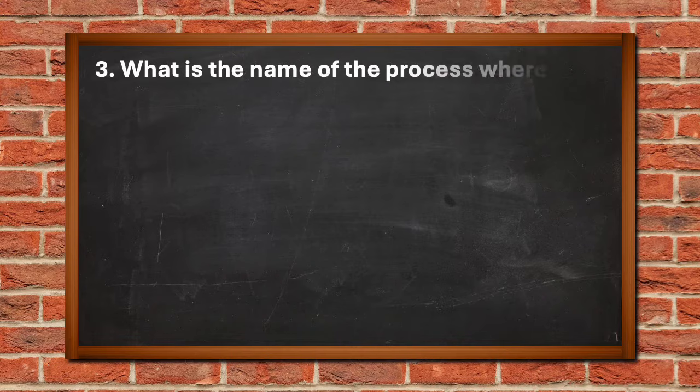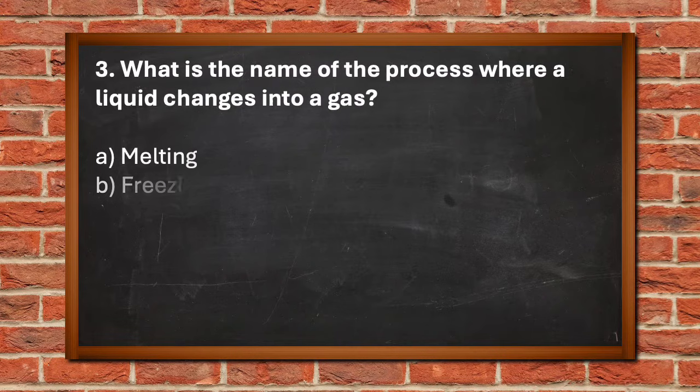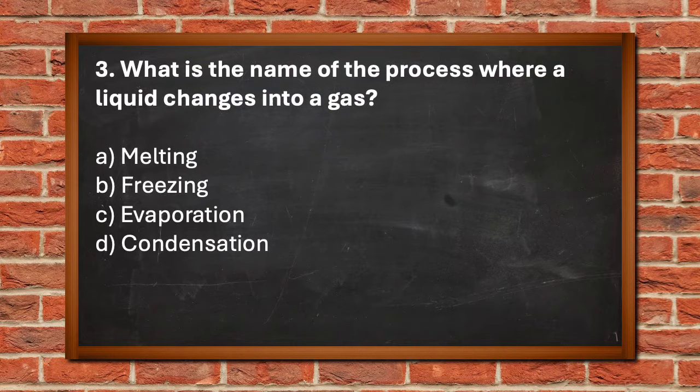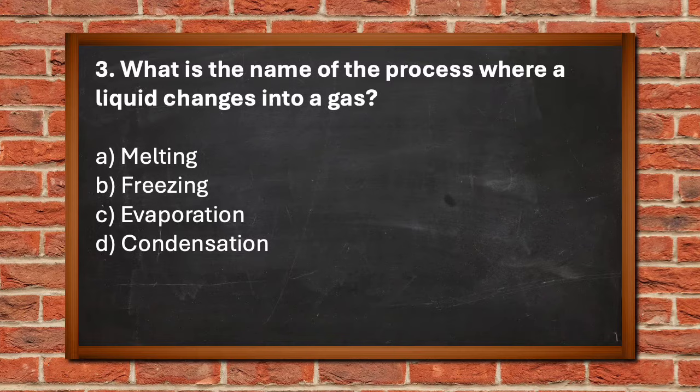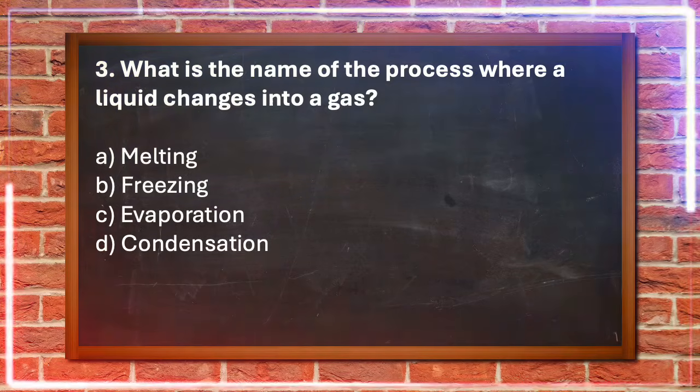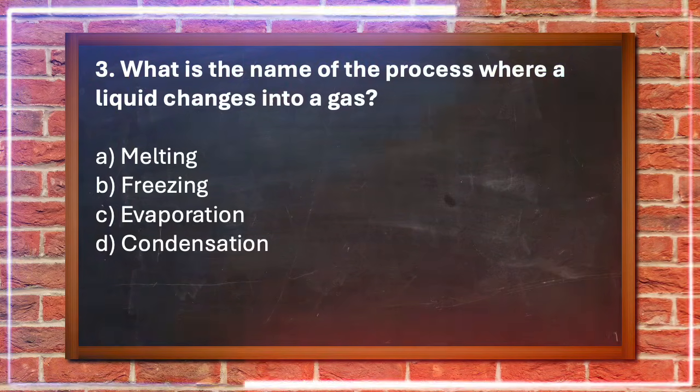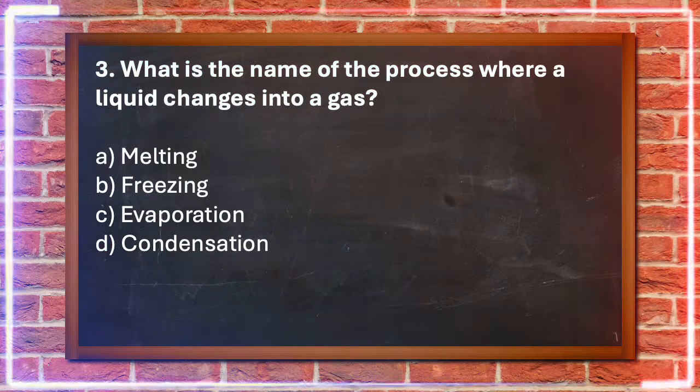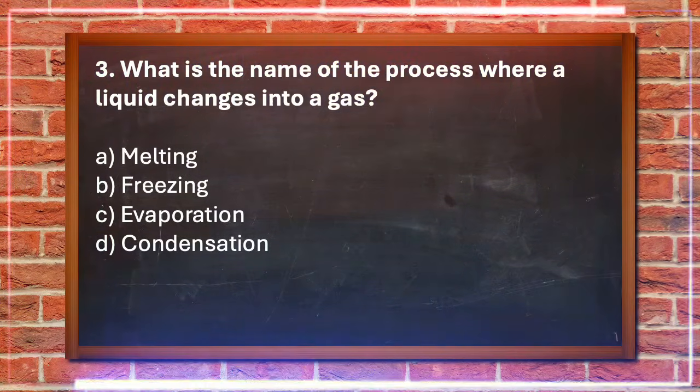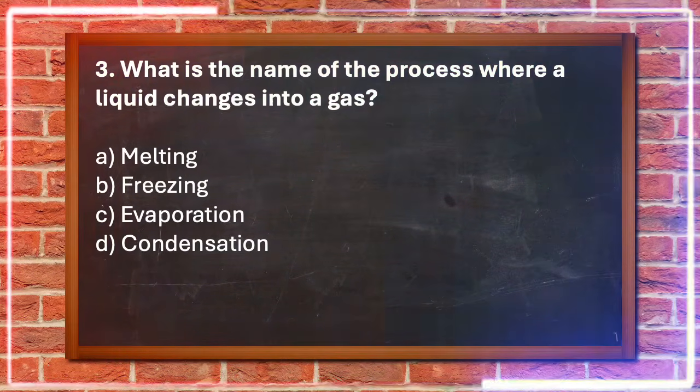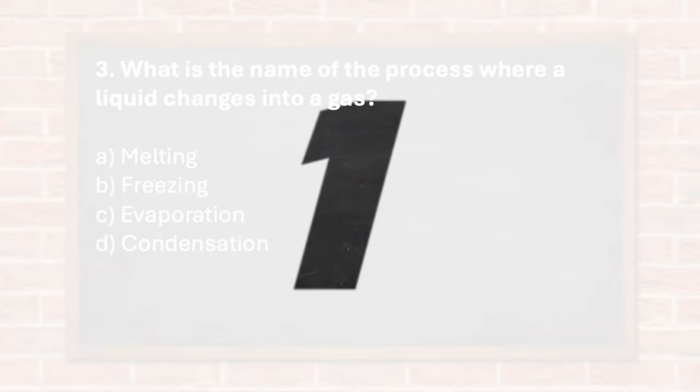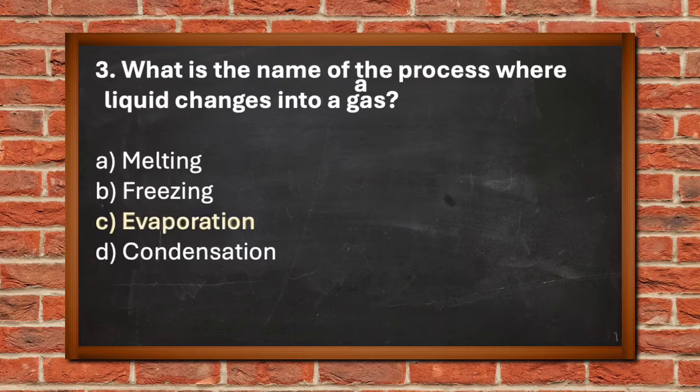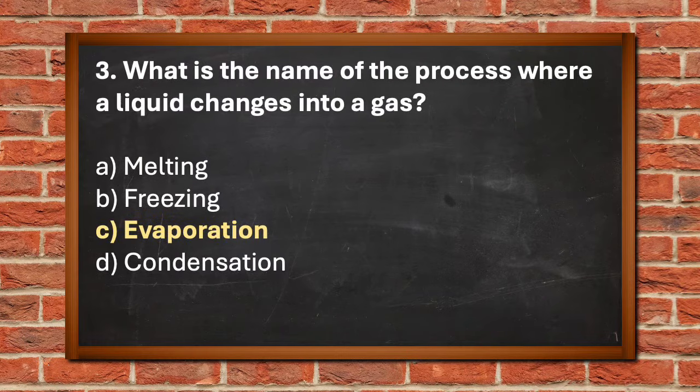Number three. What is the name of the process where a liquid changes into a gas? A. Melting, B. Freezing, C. Evaporation, D. Condensation. The answer is C. Evaporation.